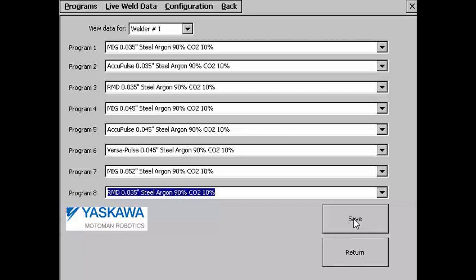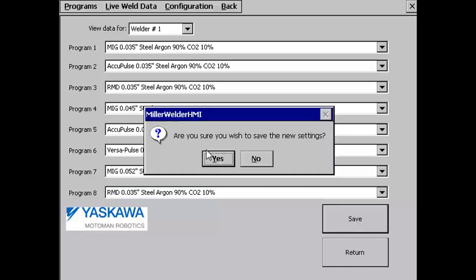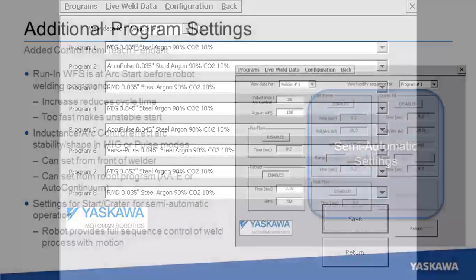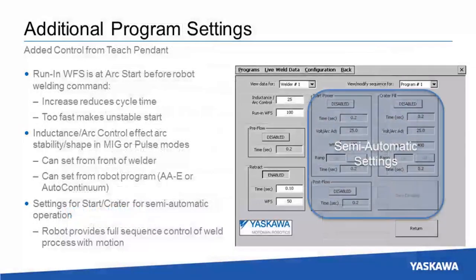The processes loaded into programs can be displayed by anyone, but the saving of new processes is password protected for security. Welding processes are the main use for Miller power source programs, but there are additional settings. While many are related to semi-automatic operation, the run-in speed can be accessed to control the feed rate used prior to arc initiation.